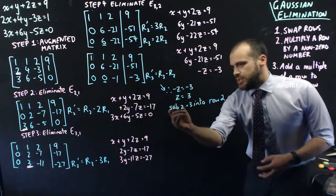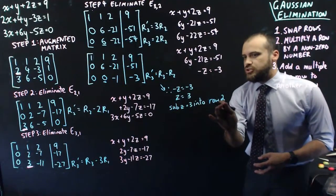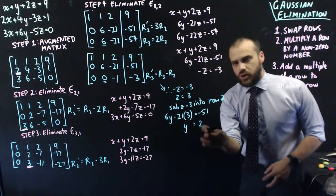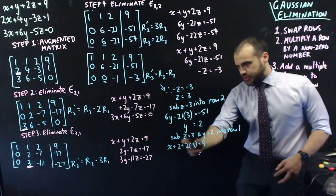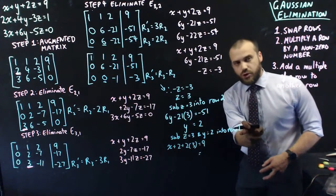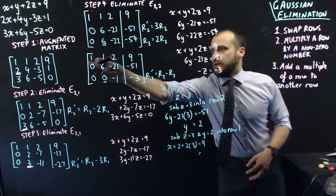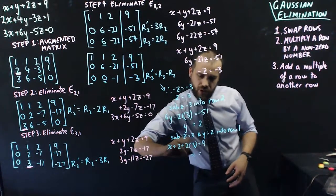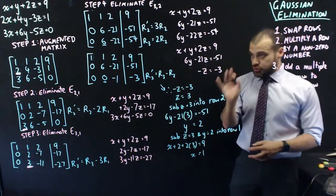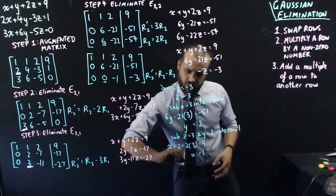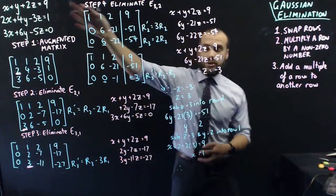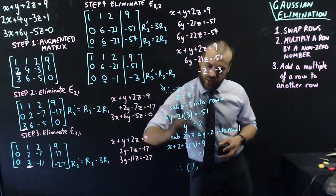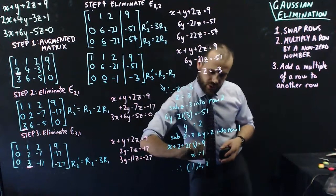Substituting z equals three into equation two will give us y equals two. And finally, we substitute z equals three and y equals two into row one. We get x plus two plus two times three equals nine. Therefore x equals one. So the solution to this system - which is where three planes meet - is at the point x equals one, y equals two, z equals three.